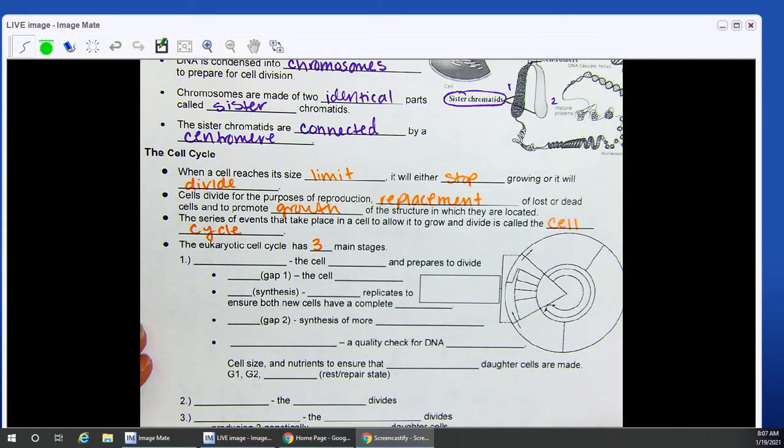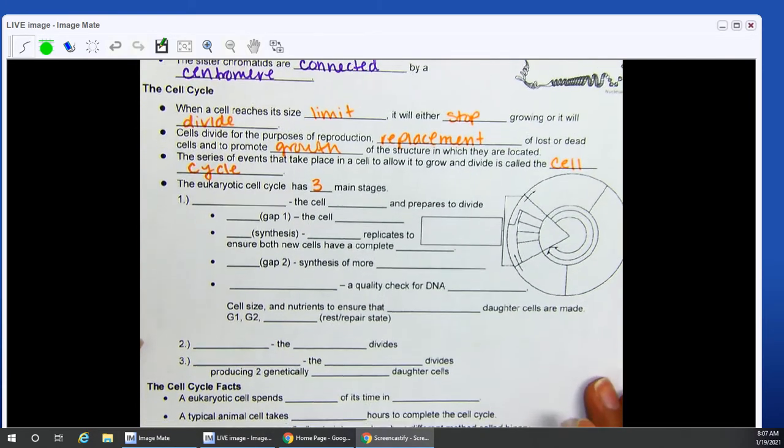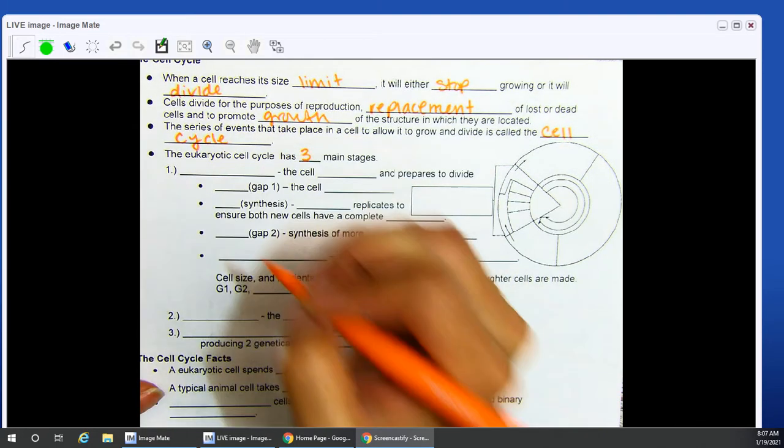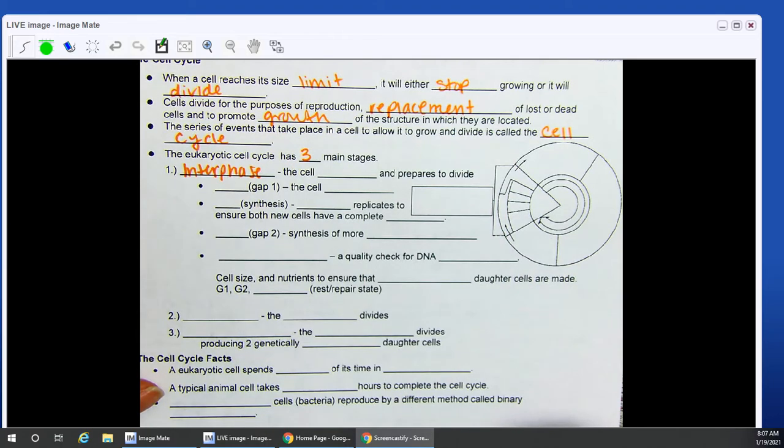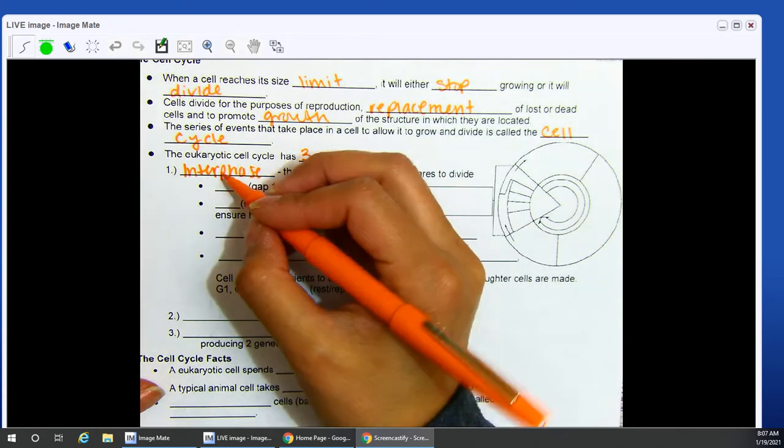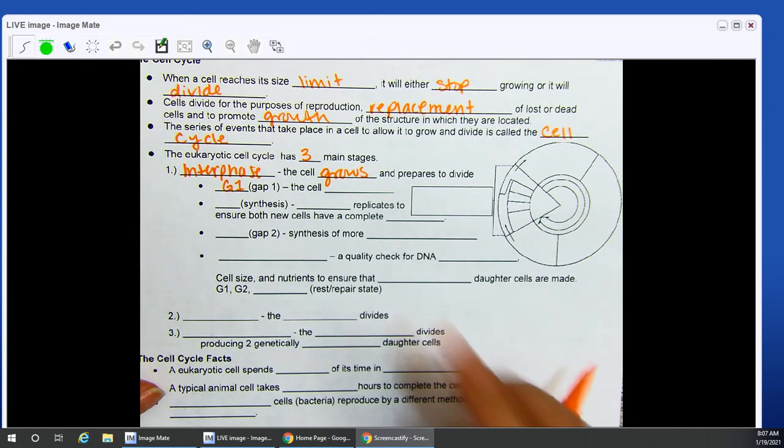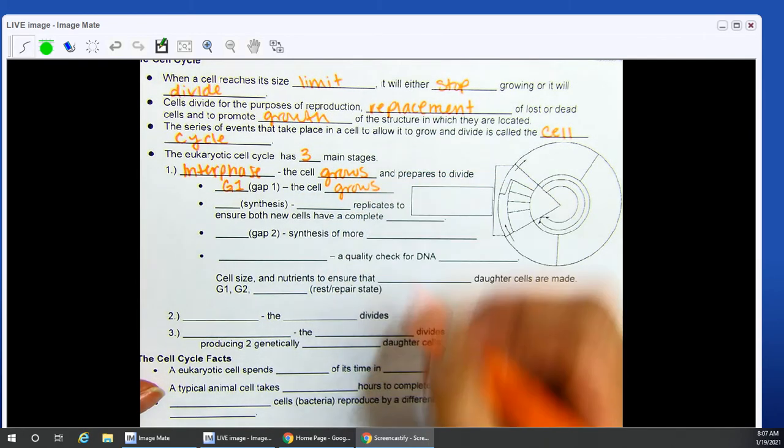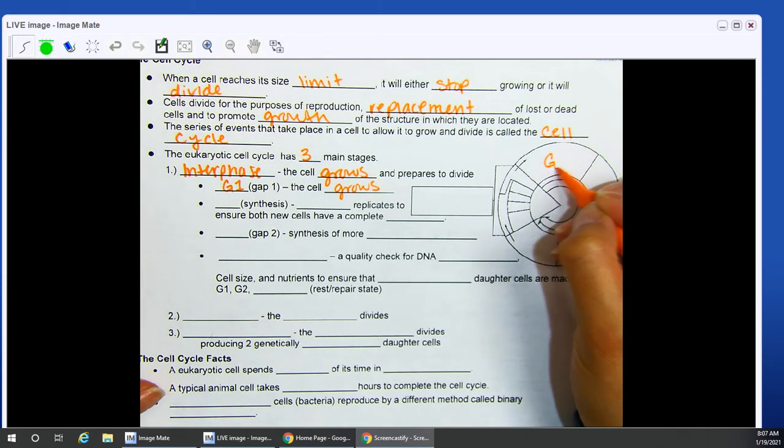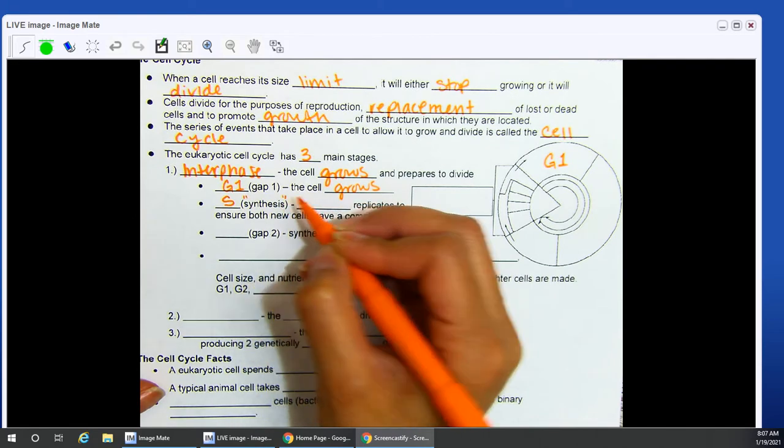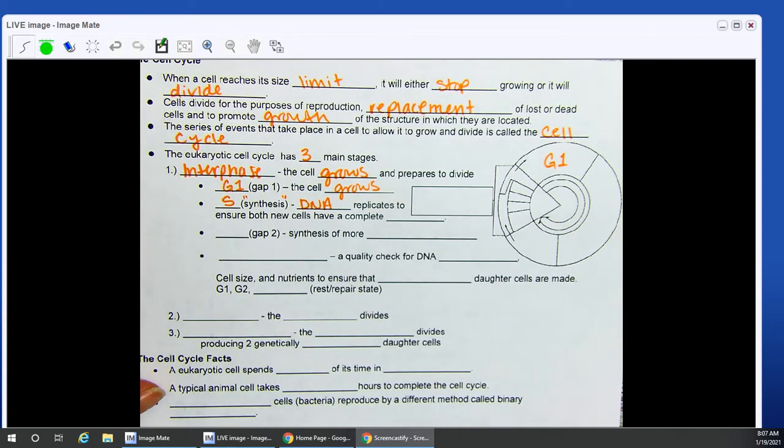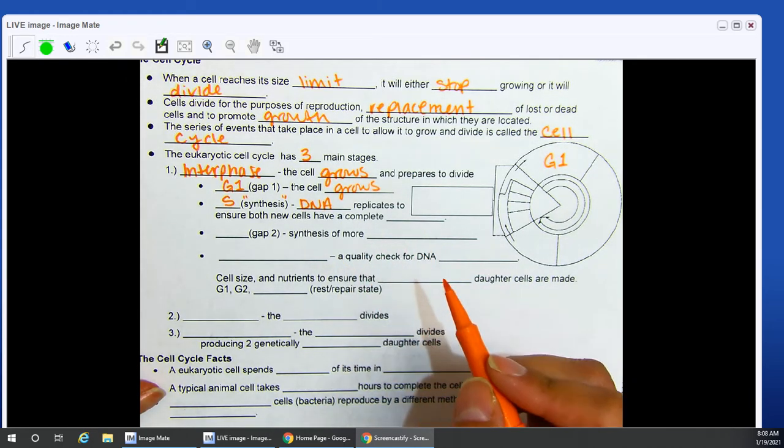The eukaryotic cell has three main stages. Our first stage is called interphase, and your cell is going to spend a lot of time in this particular phase. The cell in this stage grows and prepares to divide. G1, also known as gap 1, the cell grows. S is for synthesis. Synthesis means to make. I'm making DNA copies. DNA replicates to ensure that both of your new cells have a complete copy.